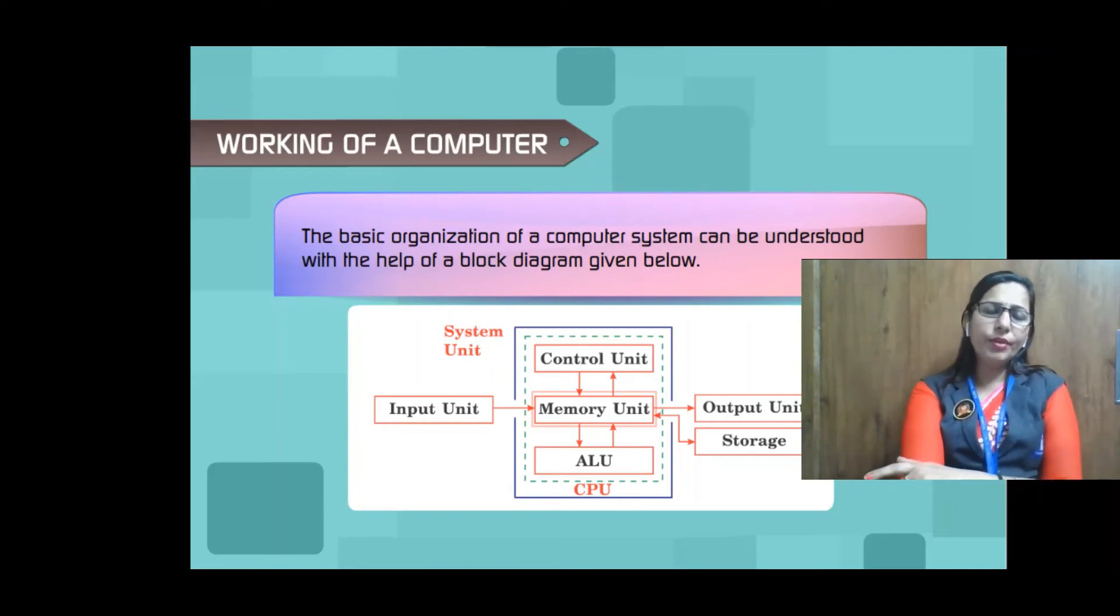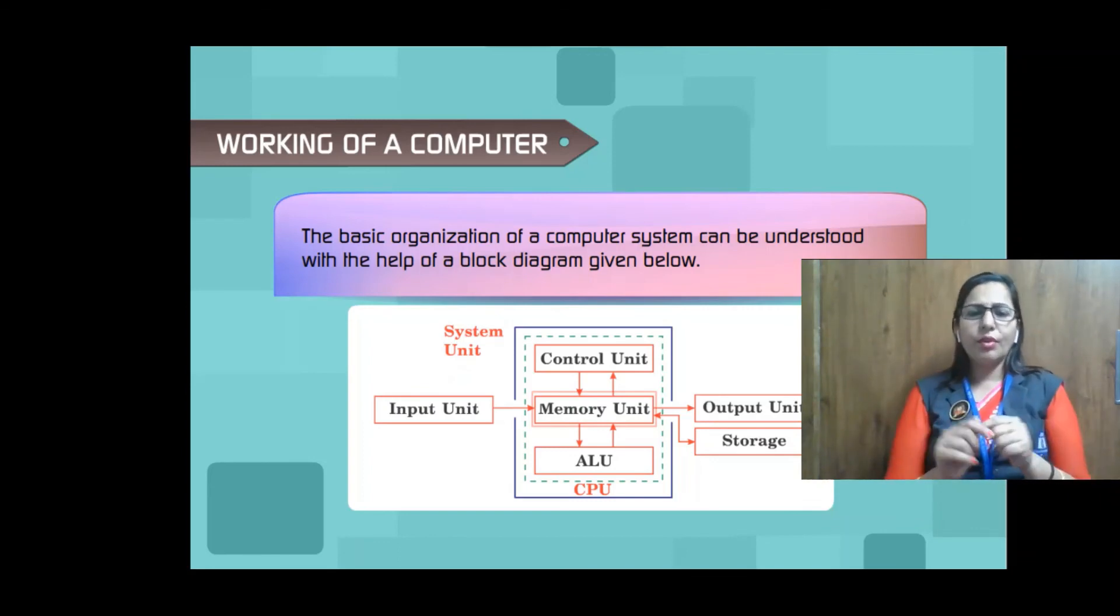You can see here input unit, and after input unit, CPU will perform all the actions, process it, process whatever we inputted. And after processing, it shows the result on the output devices that is called output unit, and we can store data by using the memory of CPU that is called storing. You already seen this block diagram in your previous class.